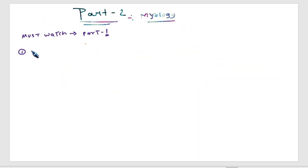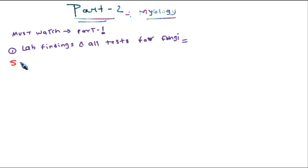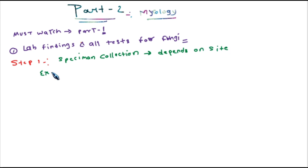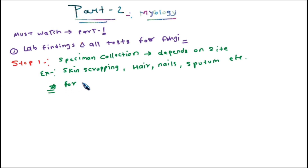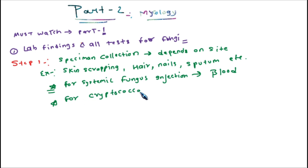Hello and welcome. I'm Krishna Singh. In this series on mycology, today we will learn about the lab findings and all tests for fungi. The first step is sample collection, which depends on the site. For example, skin scraping, hair, nail, sputum — we have different species for different sites. For systemic fungi, we collect blood, and for cryptococcal meningitis, we collect the CSF.